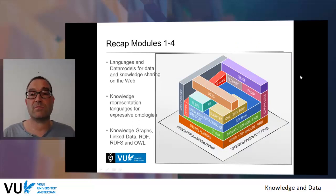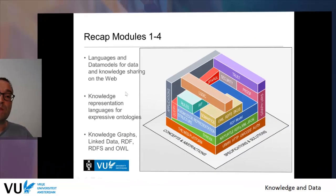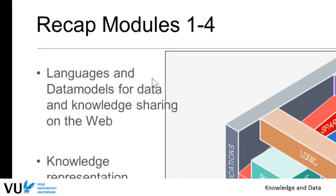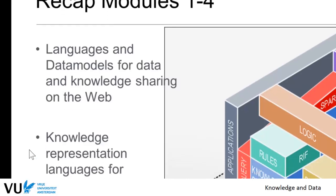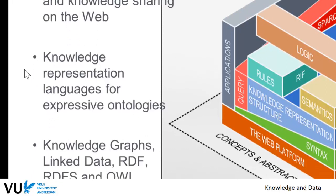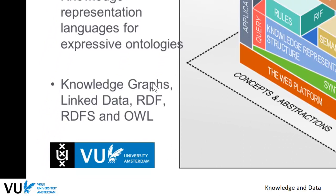Here's the big picture — the recap of modules one to four. We have seen languages and data models for data and knowledge sharing on the web. The emphasis on the web is important as it is one of the most important knowledge sharing platforms of our times. Particularly the last two weeks looked into knowledge representation languages for expressing data schemas and expressive ontologies, examining knowledge graph and linked data formats: RDF, RDFS, and OWL.